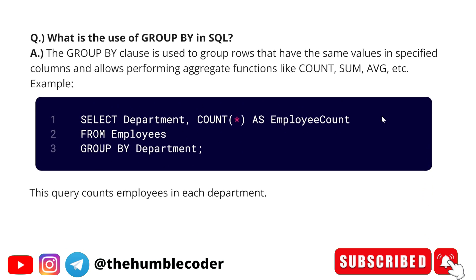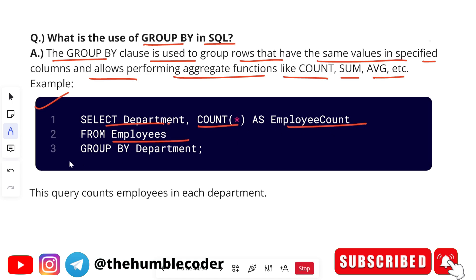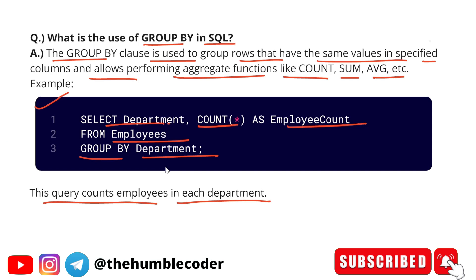The next question is: what is the use of GROUP BY in SQL? The GROUP BY clause is used to group rows that have the same values in specified columns and allows performing aggregate functions like COUNT, SUM, and AVG. For example: SELECT department_name, COUNT(*) AS employee_count FROM employees GROUP BY department. This query counts the employees in each department.